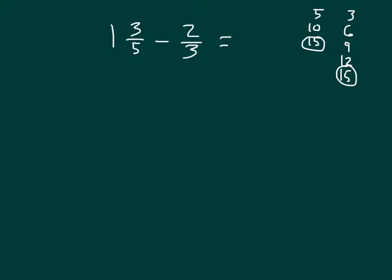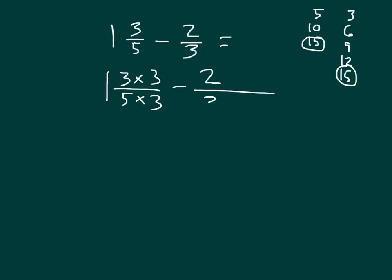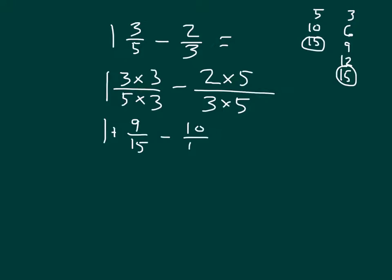To get there from 1 and 3 fifths, remember to keep that whole number, and then we have 3 over 5 times what? It's 5 times 3 to get us 15. Do the same thing in the numerator. Minus 2 over 3 times 3 times 5 to get us to 15, and remember to do the same thing in the numerator. So our whole number stays the same, and then we're just working with that fractional part. That's 1 plus 9 fifteenths minus 10 fifteenths.